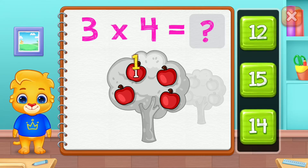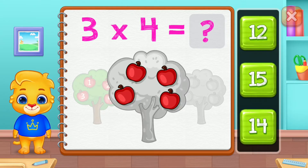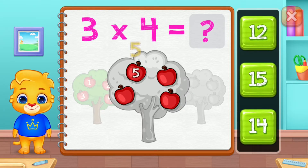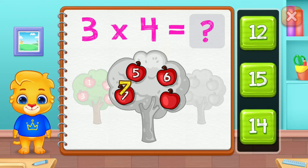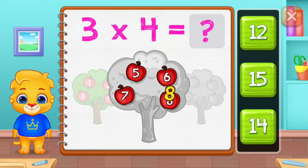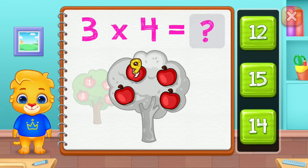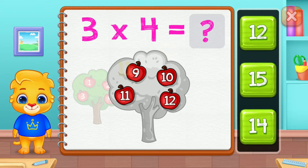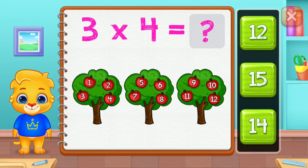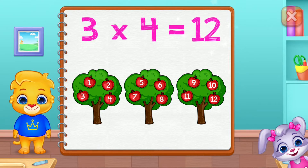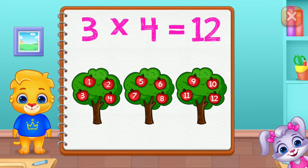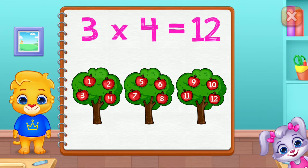One, two, three, four, five, six, seven, eight, nine, ten, eleven, twelve. Three groups of four equals twelve.